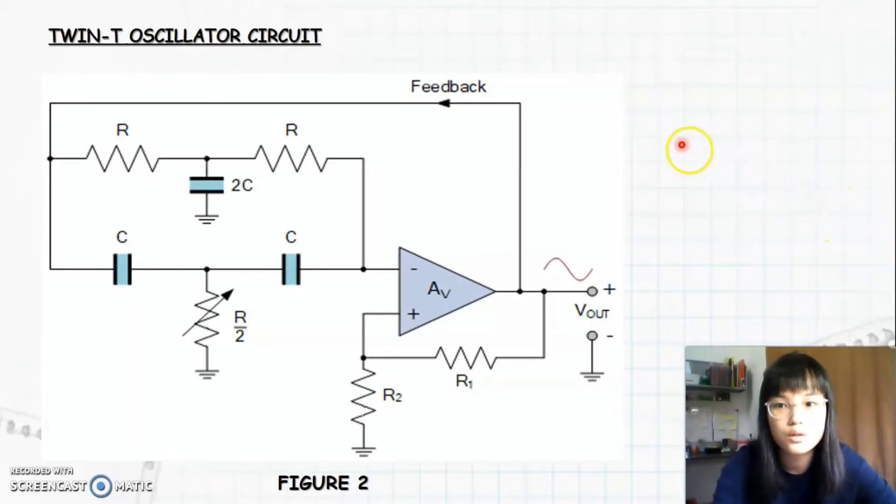This is the twin-T oscillator circuit. In the twin-T oscillator we will use an op-amp, and the twin-T network is connected with the negative pin of the op-amp, and we have a potential divider at R1.